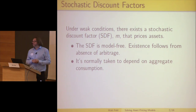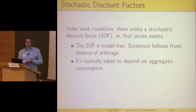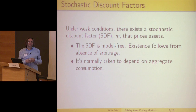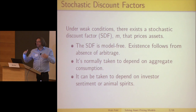Normally the stochastic discount factor is taken to depend on just aggregate consumption, like the standard CRA model that people have mentioned. The only thing that matters is aggregate consumption — if you know the time series of aggregate consumption and how that's correlated with everything else, you can price everything. But there's nothing necessary about that. You could write down stochastic discount factors that depend on investor sentiment or animal spirits or anything, as long as you can relate it to some observable data.